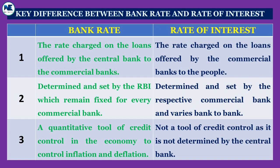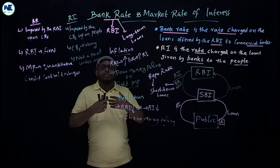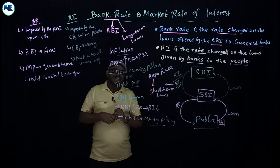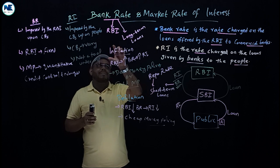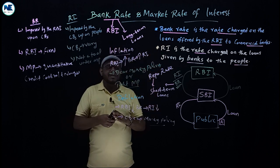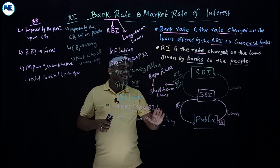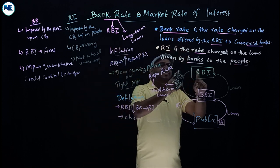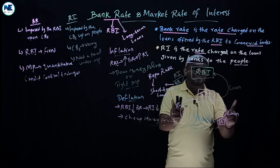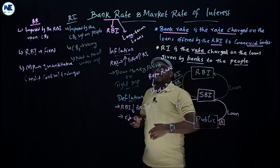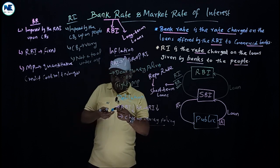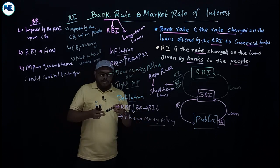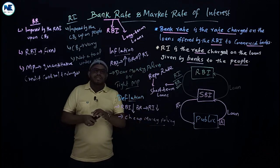RBI is the apex bank of the country — it enjoys the monopoly of note issue. Today we covered the definition of bank rate and market rate of interest, how they work, and their role in dealing with inflation and deflation through monetary policy.